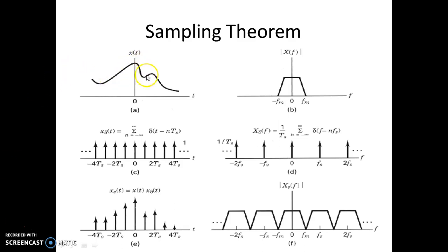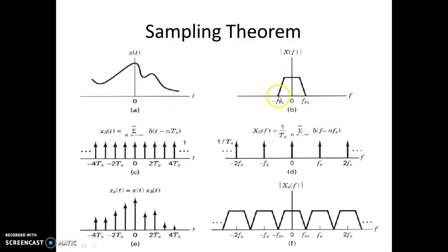We had a continuous time signal x(t) that is sampled using a train of impulses, done by multiplying x(t) with that train of impulses. You get another train of impulses whose amplitude is scaled by the amplitude of x(t). On the right side you can see the frequency equivalence of these signals. X(f) is the frequency domain representation of x(t) — it is a band-limited signal, limited from minus fm to fm. X_delta(f) is the frequency domain representation of x_delta(t), and X_s(f) is the frequency spectrum of the sampled signal.